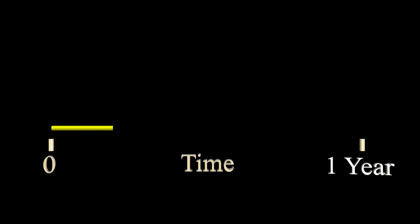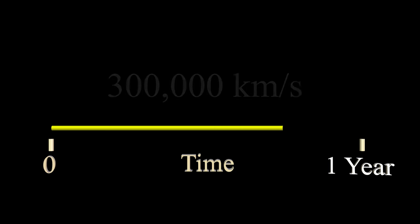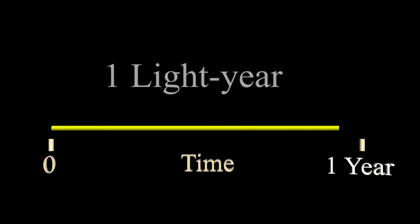Light streams through the vacuum of space at the incredible speed of 300,000 kilometers per second. A light year is the distance traveled at that speed in one year. I'll leave it to you to calculate how many kilometers there are in one light year.